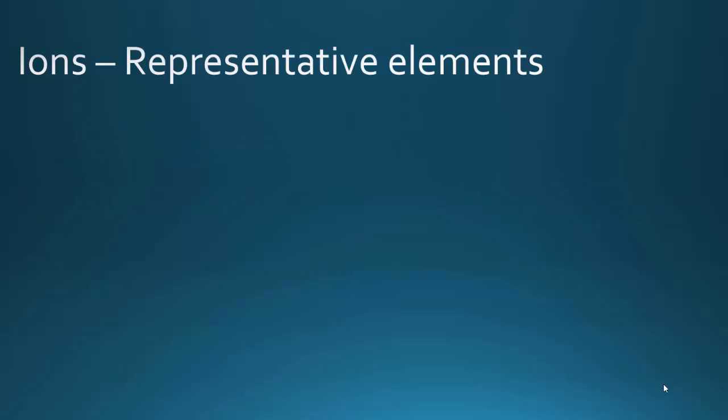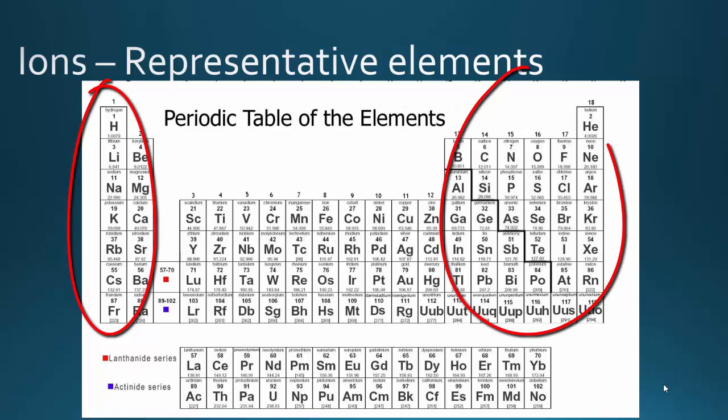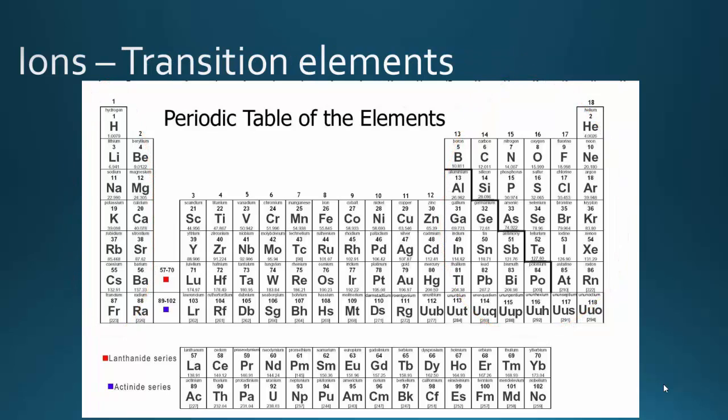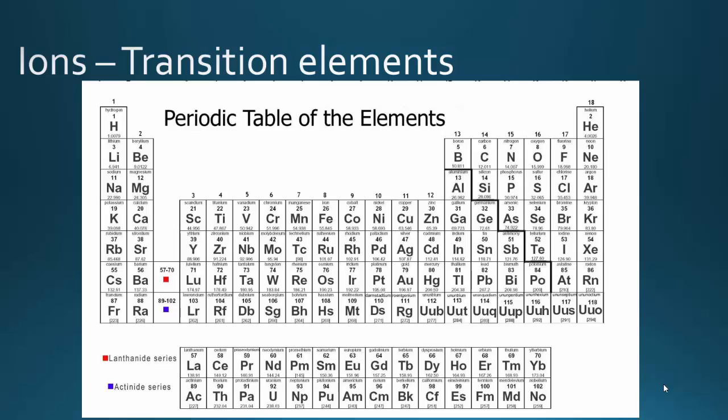You have the ions of the representative elements, and the representative elements are the tall columns, these two and these six. The number of valence electrons is equal to the number of the column that the element is in. But we also have the transition elements, which are the elements in the D block. We're not going to worry about the F block. We need to know how to form ions with these elements.